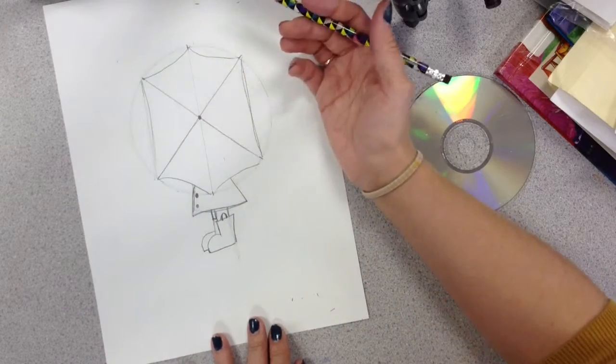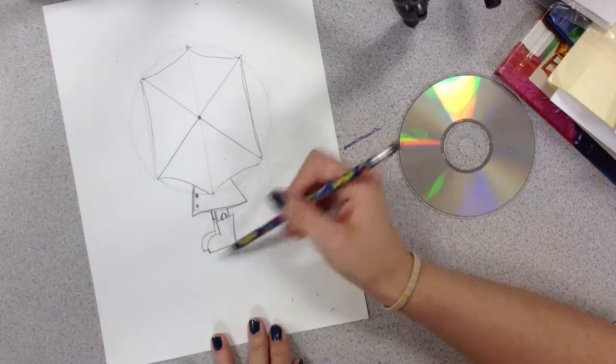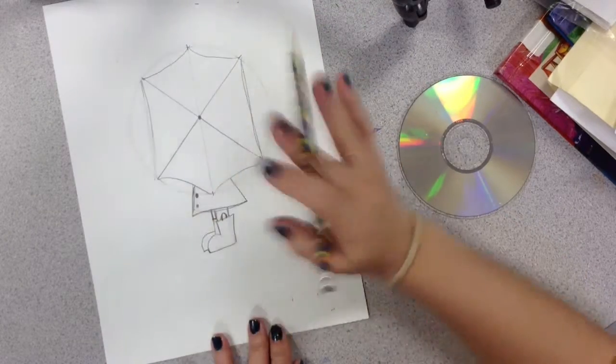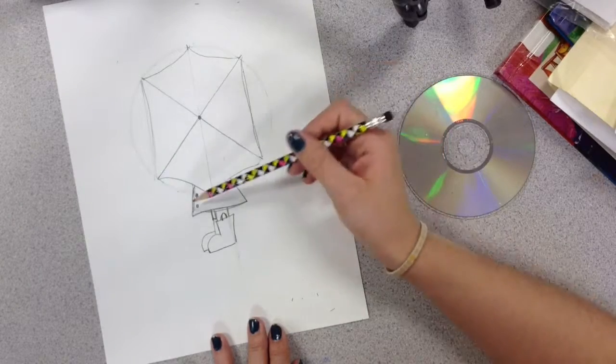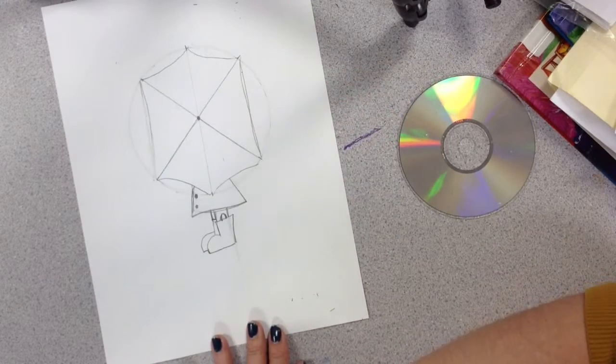What are we painting? The coat and the boots. Not the umbrella. Go ahead and color this in so next class we'll be all ready to go with our umbrella.